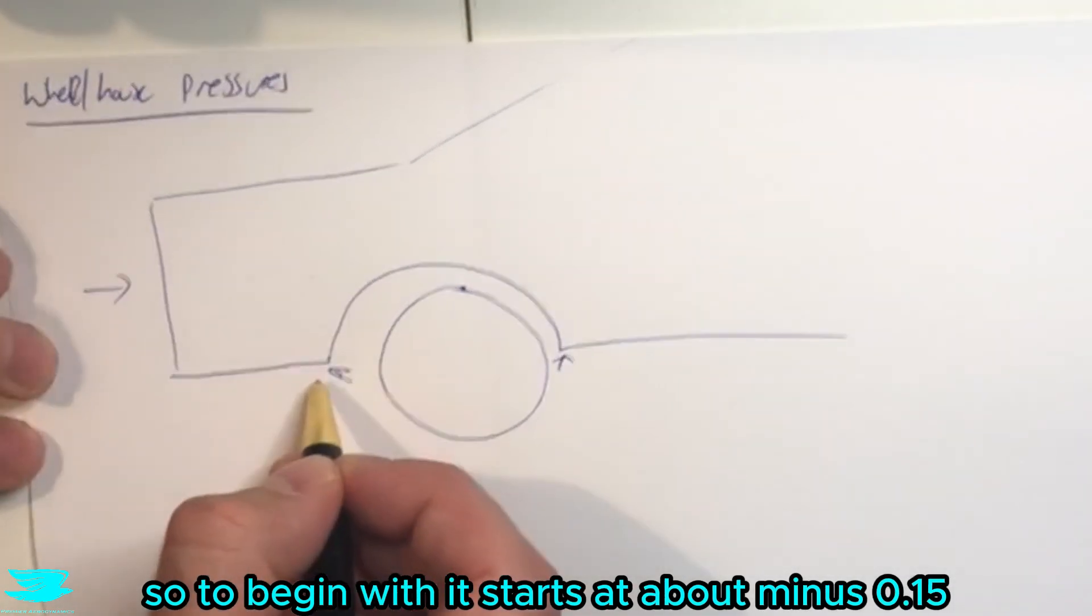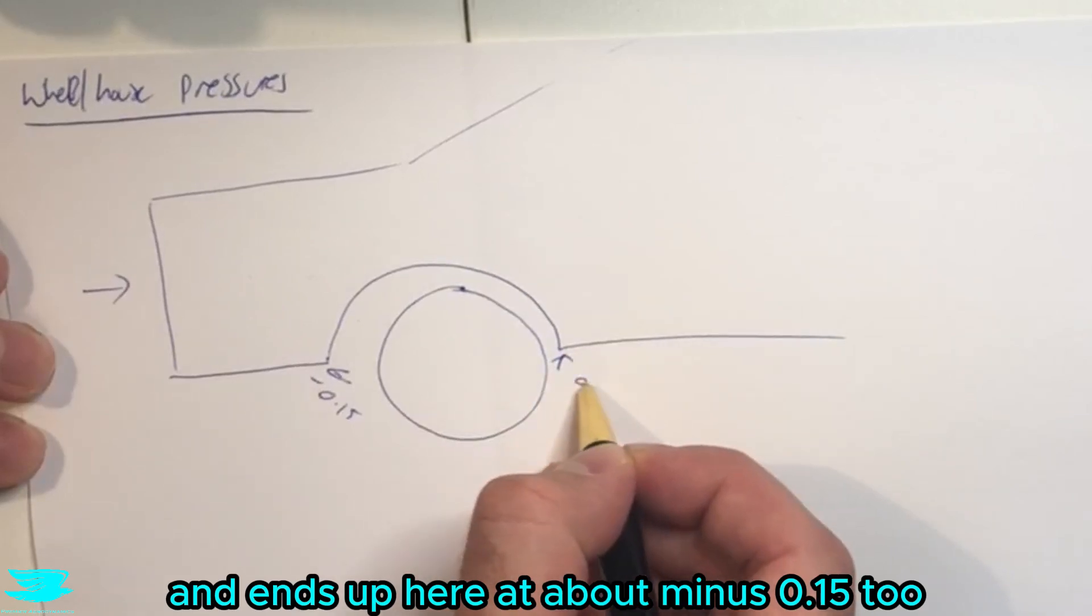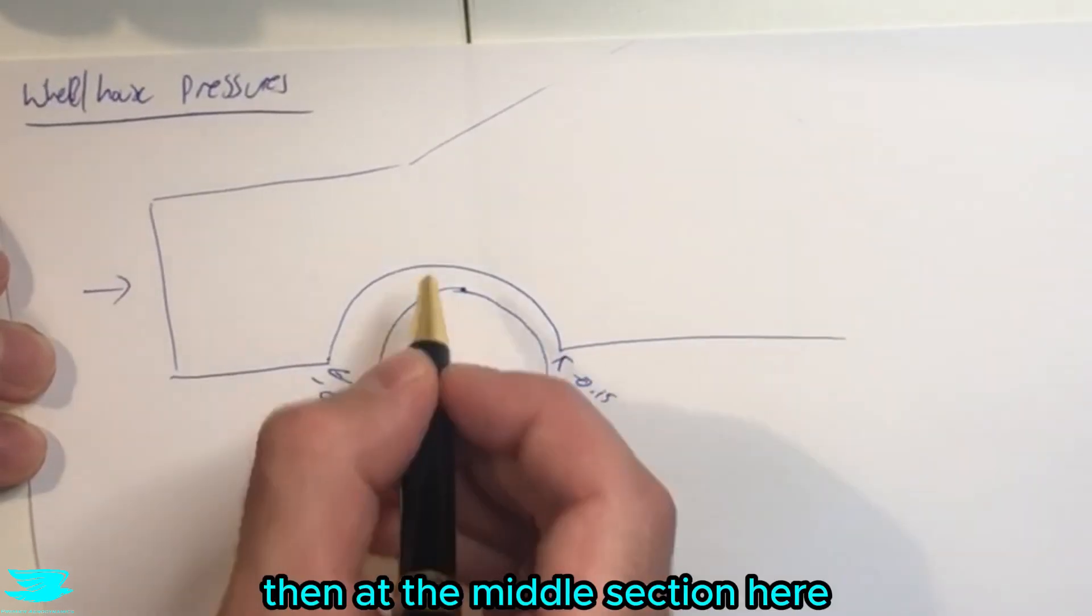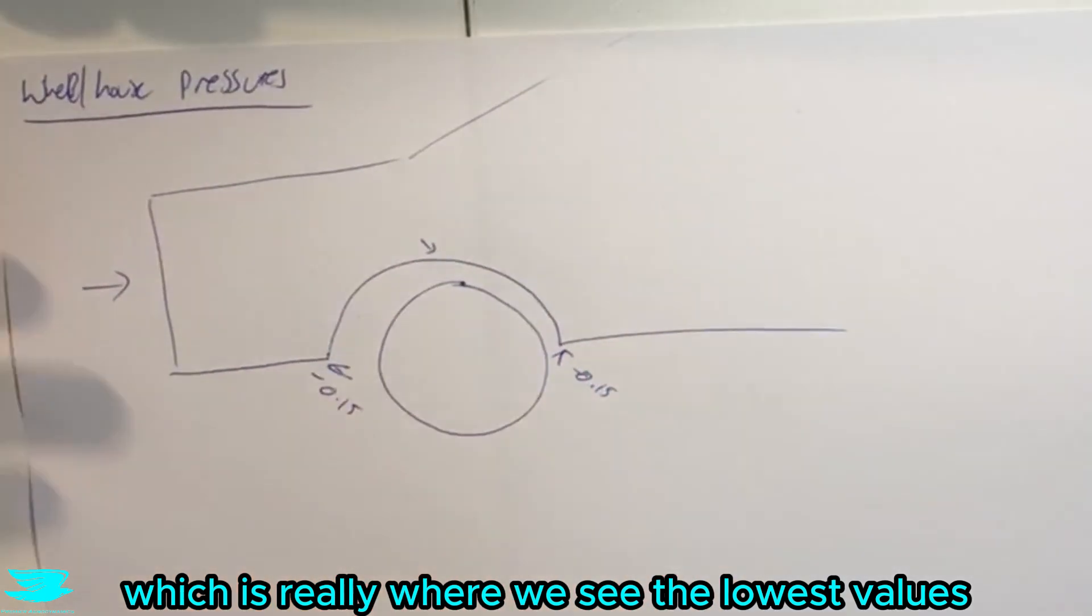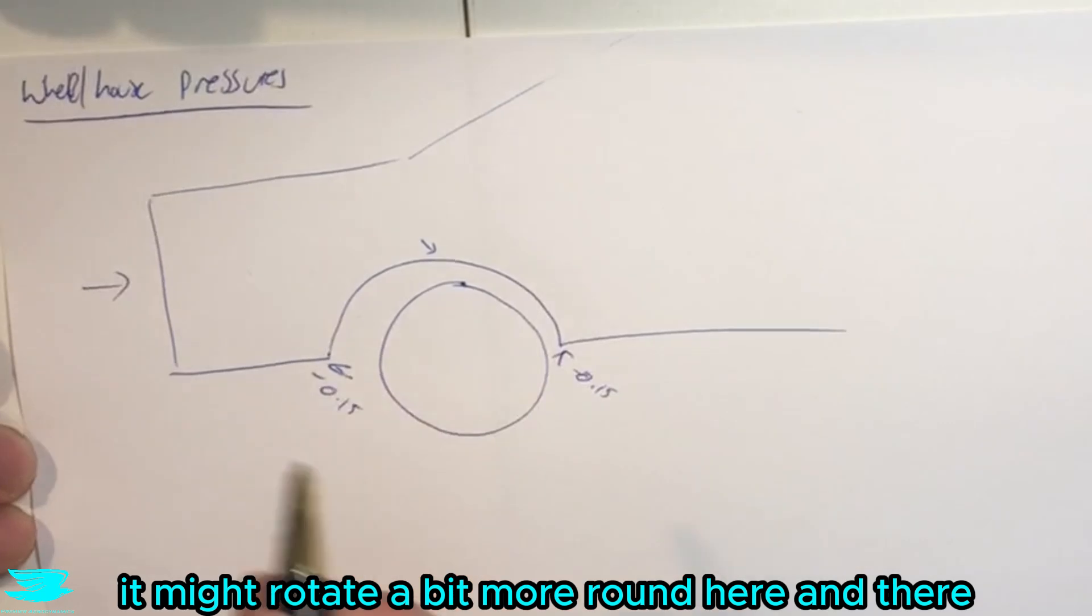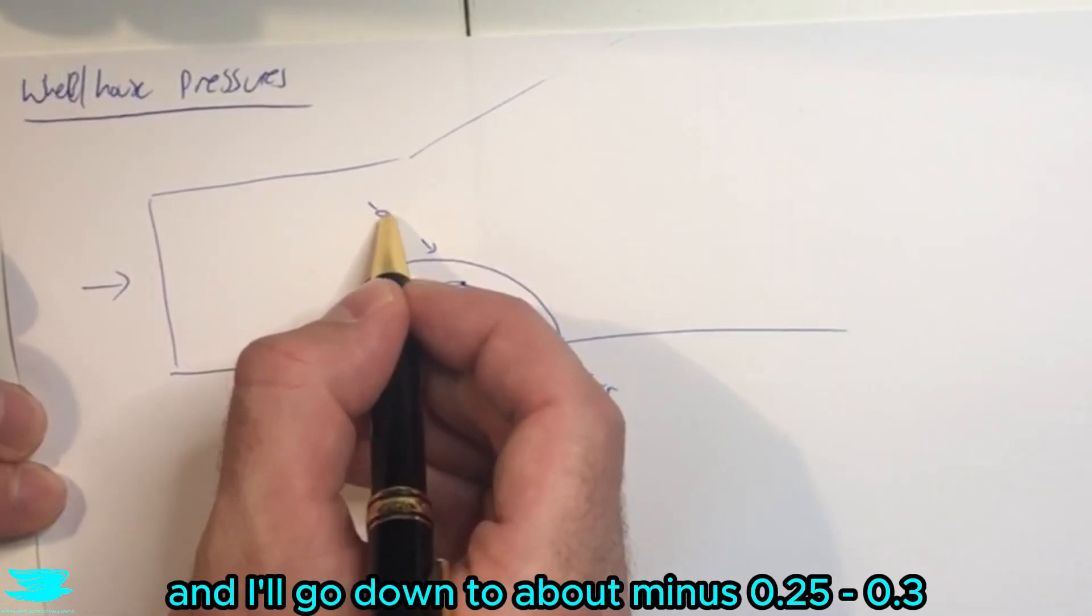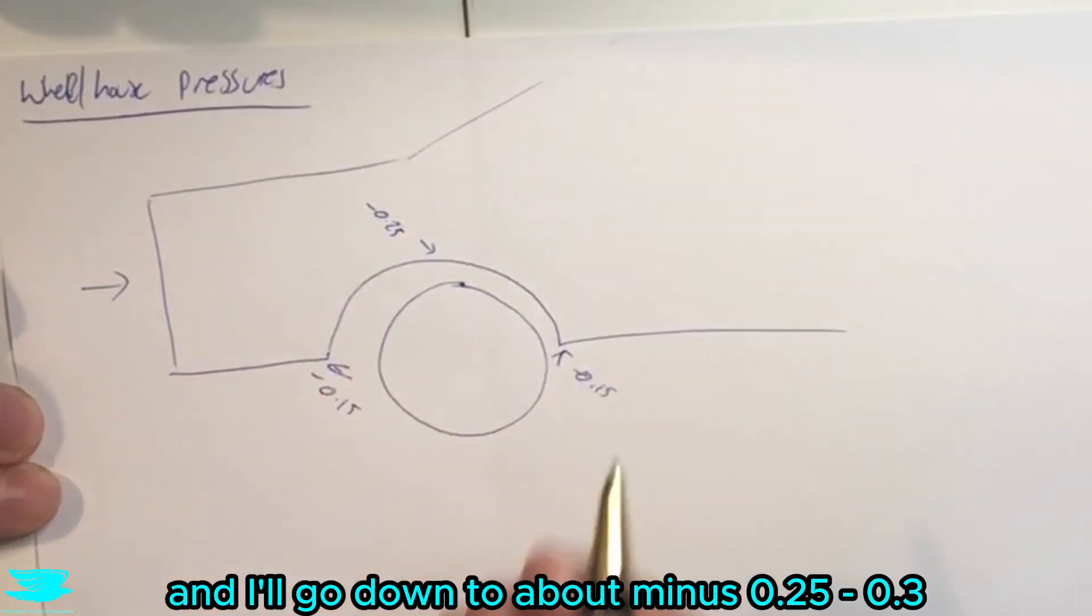So to begin with, it starts at about minus 0.15 and it ends up here at about minus 0.15 too. Then at the middle section here, which is really where we see the lowest values, depending on the car, it might rotate a bit more around here and there. But generally speaking, it's about at the middle here, and it'll go down to about minus 0.25 to minus 0.3.